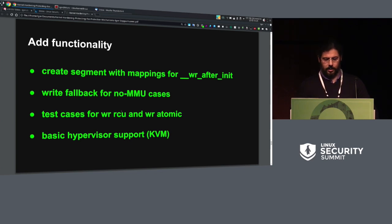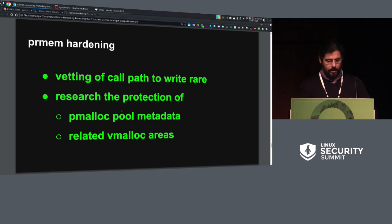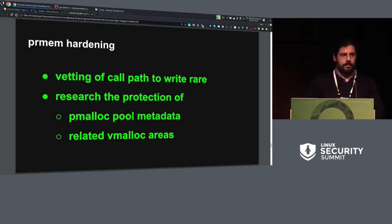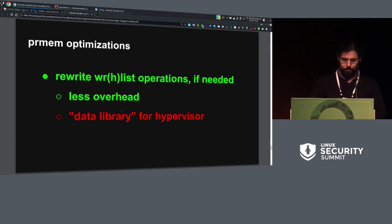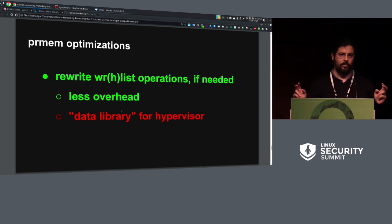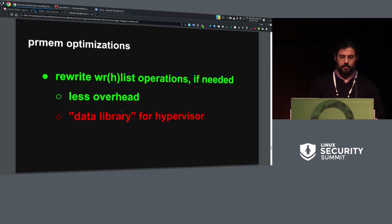What's next: I have to fix the static write-after-init for ARM64 and the fallback, and the test cases. Then the problems I just described — probably vetting the call path is something doable. The metadata is questionable because it's not only about the metadata I'm producing with pmalloc pool but also the metadata that comes from the vmalloc areas, and that seems to be in a completely different class of difficulty. The optimization I mentioned — the drawback of that is whatever becomes a sort of intrinsic function then needs to be implemented also on the hypervisor side. It would be nice if there was some sort of data library that could be shared in both cases, but I don't know how much that is possible.